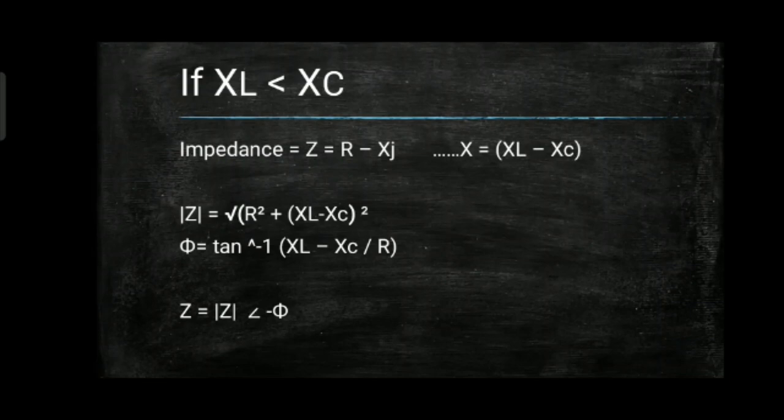Second condition: inductive reactance is less than capacitive reactance. Impedance Z = R − Xj, where X = XL − XC. The magnitude |Z| = √(R² + (XL − XC)²), and φ = tan⁻¹((XL − XC) / R). Since XL < XC, Z = |Z|∠−φ.